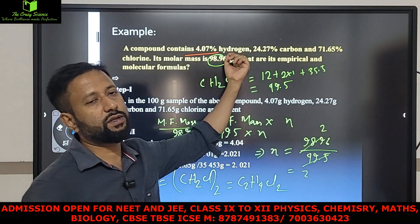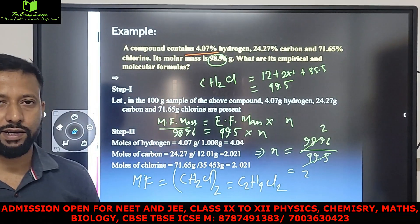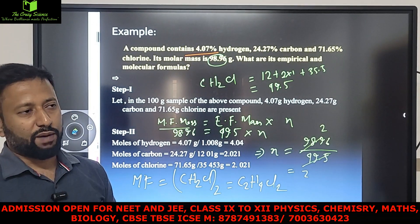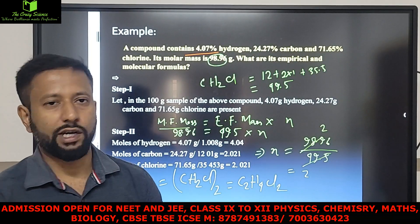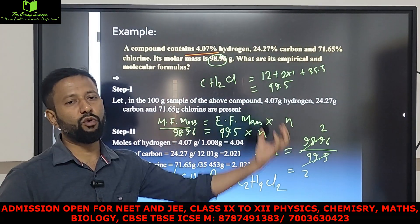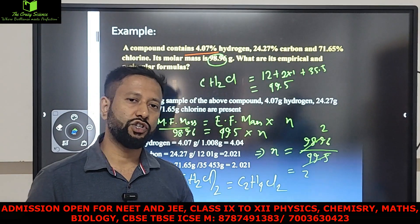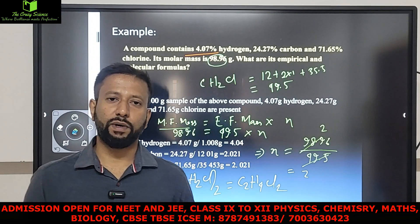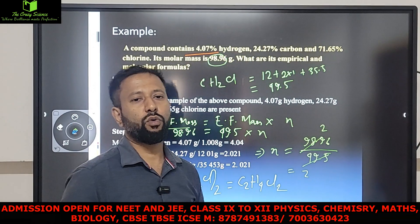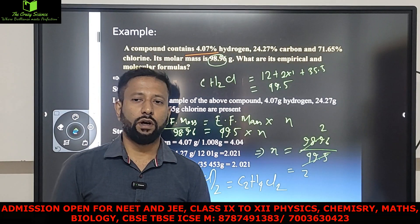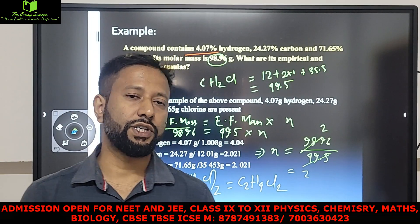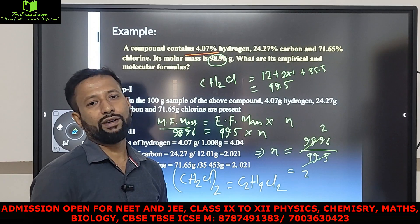To summarize what we have done: first, convert percentage into grams (out of 100 grams). Then divide by molar mass to get the number of moles. Then find the simple whole number ratio. After getting the simple whole number ratio, write the empirical formula. Then use molecular formula mass equals empirical formula mass into N to find the index N, which can be 1, 2, 3, 4, 5, or any number.